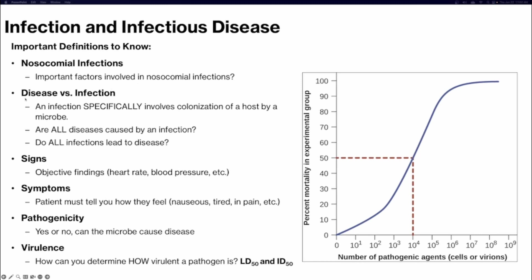Disease versus infection: an infection specifically refers to colonizing a host by a microbe. Not all diseases are caused by an infection — a disease is any instance where your body is not functioning as it should, and that is not all caused by microbes. Do all infections lead to disease? No — you can be infected or have a pathogen present and not experience signs and symptoms, as with carrier states. Signs are objective findings like heart rate and blood pressure. Symptoms are things a patient has to tell you, like nausea, fatigue, or pain.